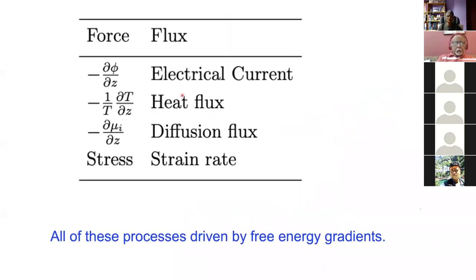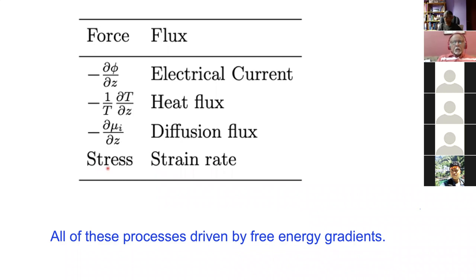To summarize the examples so far: for electrical current, the voltage drives the current — that's the electromotive force. For heat flux, the force is −(1/T)·(dT/dz). For diffusion, the flux is driven by the gradient of free energy. And if you are deforming something plastically, the product of stress and strain rate is the free energy dissipation rate, so you will find the strain rate to be proportional to the stress — assuming a perfectly plastic solid.